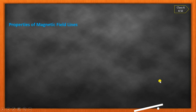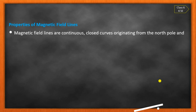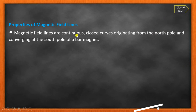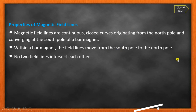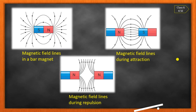Properties of magnetic field lines: First, they are continuous closed curves originating from the North Pole and ending at the South Pole outside the magnet. Second, within a bar magnet, the field lines move from the South Pole to the North Pole. Third, no two field lines intersect each other — all lines are separate and never cross.